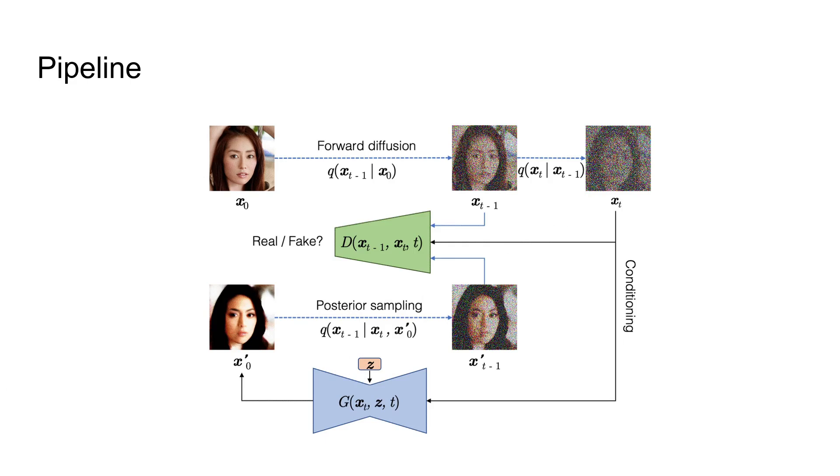And finally, since this is a GAN architecture, we have a discriminator network that predicts whether the given x_{t-1} is real or fake. It outputs the probability that the given sample comes from the real forward diffusion process. The discriminator also takes the noisy image x_t and the time step t.